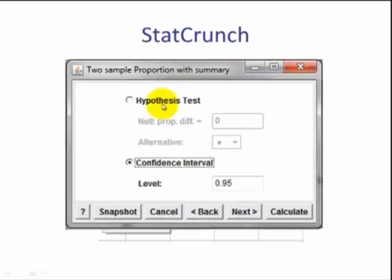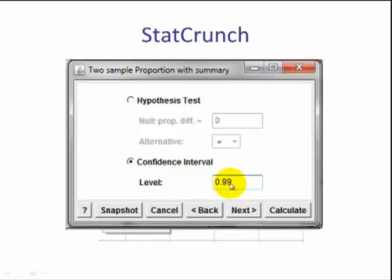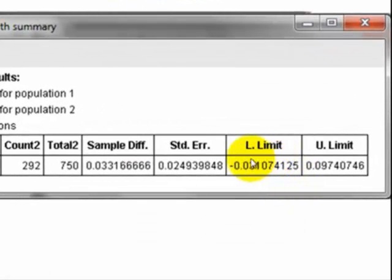Hit next. We change it from hypothesis test to a confidence interval and we change the level from 95 to 99. We hit calculate. And here we have the lower limit and the upper limit.